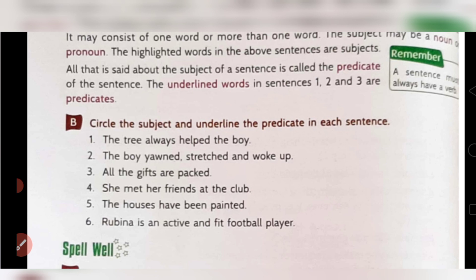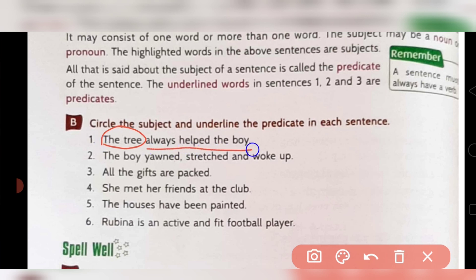Question B: circle the subject and underline the predicate. First — 'The tree always helped the boy' — 'the tree' is the subject, circle it; 'always helped the boy' is the predicate, underline it. Second — 'The boy yawned, stretched and woke up' — 'the boy' is the subject, circle it; 'yawned, stretched and woke up' is the predicate. Third — 'All the gifts are packed' — 'all the gifts' is the subject; 'are packed' is the predicate.